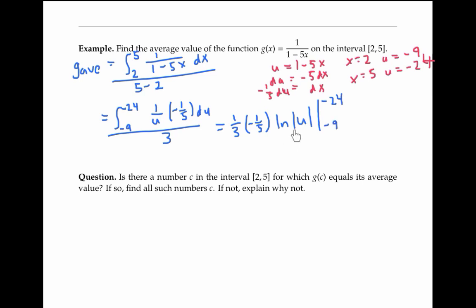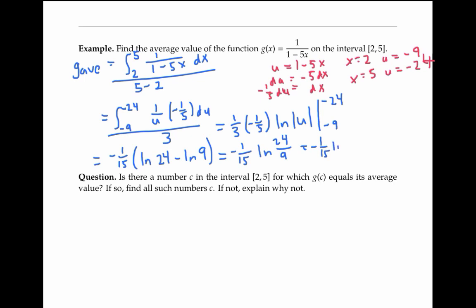The absolute value signs are important here, because they prevent me from trying to take the natural log of negative numbers. Evaluating, I get negative one fifteenth times ln(24) minus ln(9). Using log rules, that simplifies to negative one fifteenth times ln(24/9), which is negative one fifteenth times ln(8/3). As a decimal, that's approximately negative 0.0654.